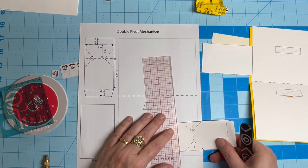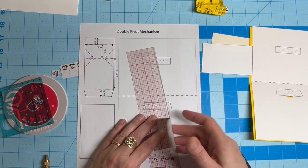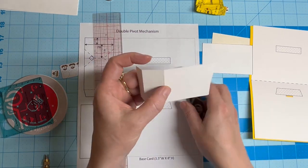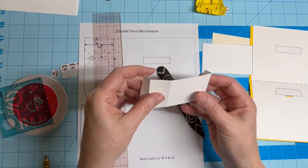Carefully fold and score the mechanism. Dashes represent mountain folds and the dots are valley folds, but I'll be reversing these so that the lines won't show when I glue the piece down.